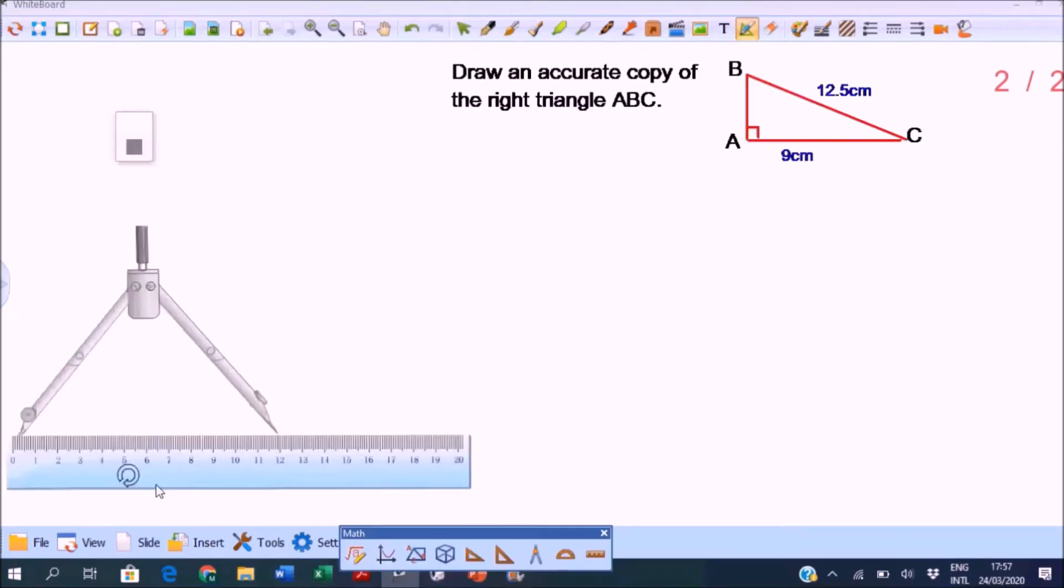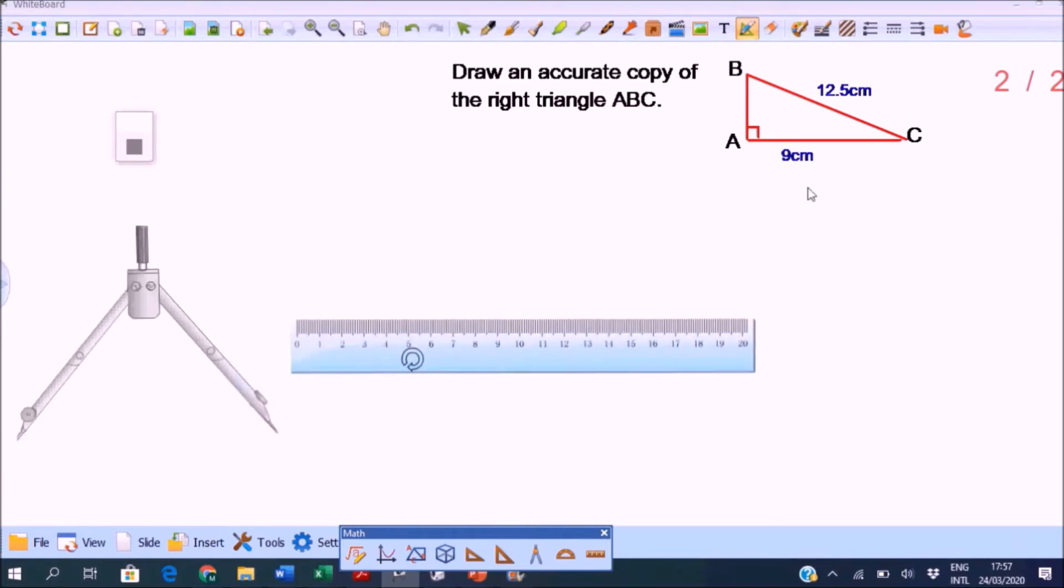Let's draw the accurate copy of the given right triangle. This is RHS - a right angle, a hypotenuse, and a side is given. First we will draw the base. You have to draw a line that is twice the base, so this is 9 centimeters, so we will draw 18 because 9 times 2 is 18 centimeters.